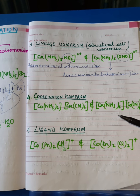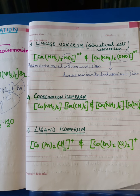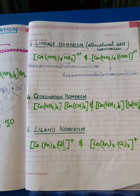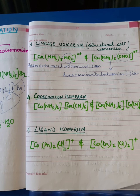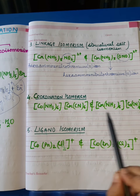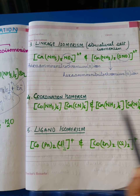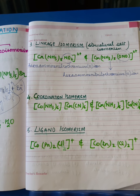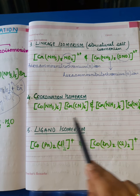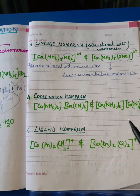Next we have coordination isomerism. It is a very special kind of isomerism shown by coordination complexes in which both the cation and anion are complex ions. That is the primary condition for coordination isomerism. In this type of isomerism, it arises due to the interchange of ligands between the coordination spheres of the positive and negative parts.